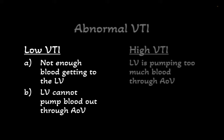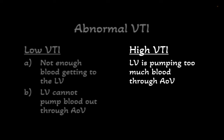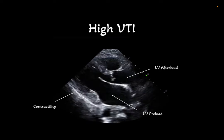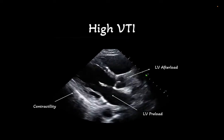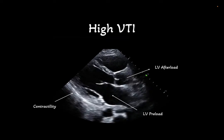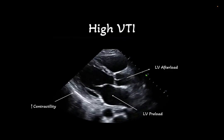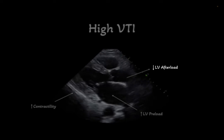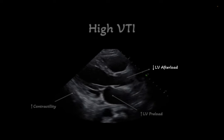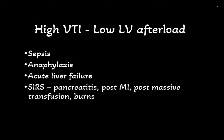A low VTI can be due to two things: A) there's not enough blood getting out of the LV, or B) the LV is not able to pump out enough blood through the aortic valve. On the other hand, a high VTI is because the LV is pumping out too much blood. Recall that preload, afterload and contractility are the primary determinants of stroke volume. For a high stroke volume you either need high contractility, high LV preload, or low LV afterload. However, of these three, the only thing that would lead to shock is a low LV afterload. Thus, causes of shock with a high VTI include disease processes that lead to vasoplegia and low afterload.